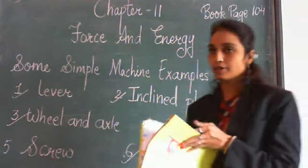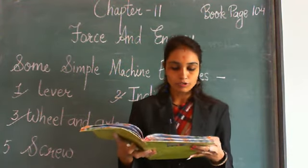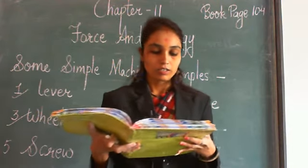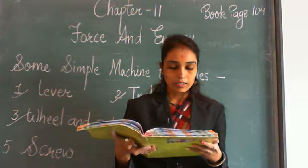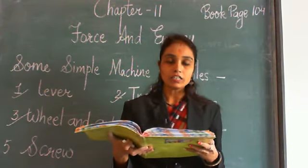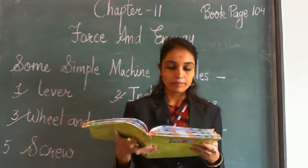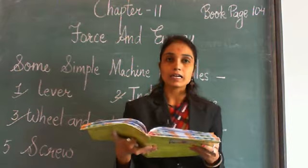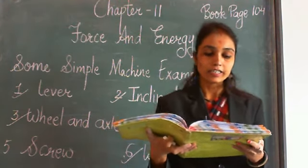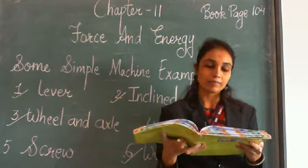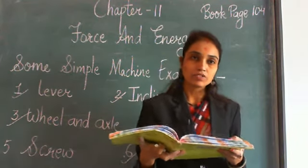Next is the wedge. A wedge is a special kind of inclined plane — it is simply two inclined planes sloping away from each other. It is shaped like a sharp edge. Knives, nails, and pins are examples of wedges we use in our daily life. Underline this: a wedge is simply two inclined planes sloping away from each other.